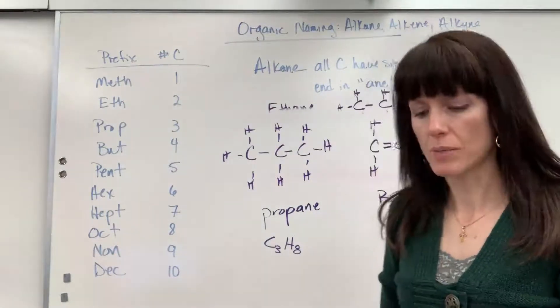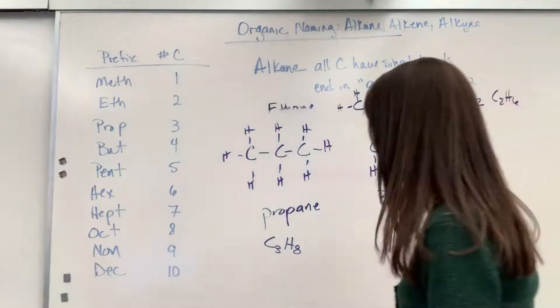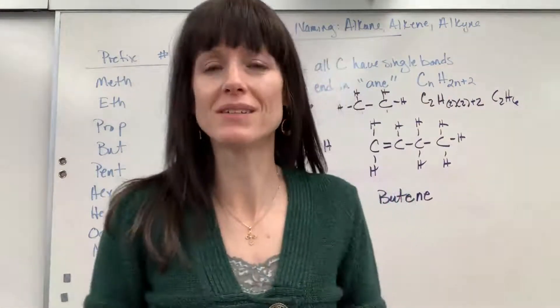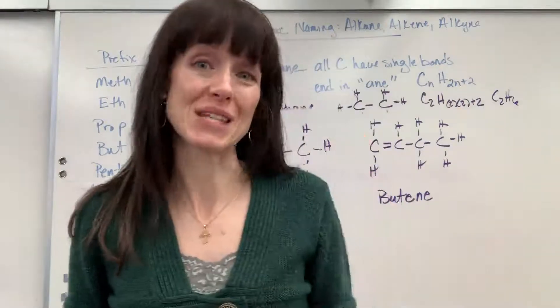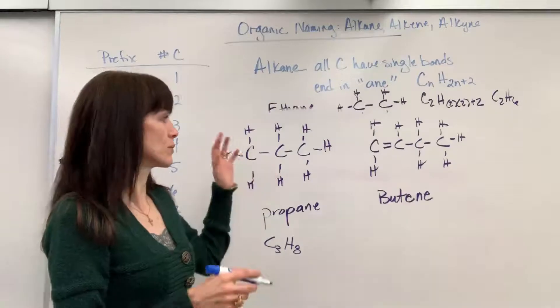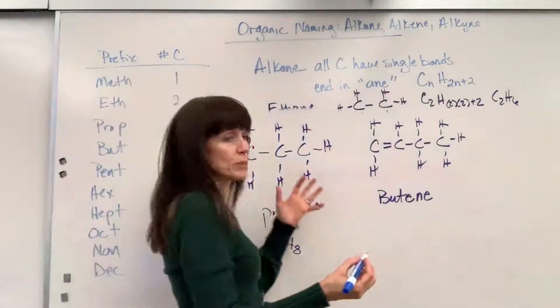Well, what we do is we number carbons, and the rule is you always give the carbon first touching the multiple bond, the double bond in this situation, you give it the lowest number possible. So you always have two options. You can number left to right, right to left. So let's do both ways.